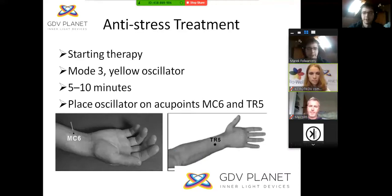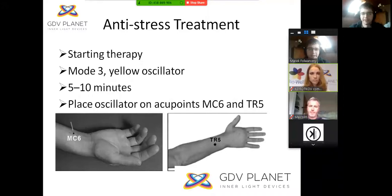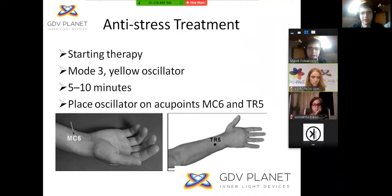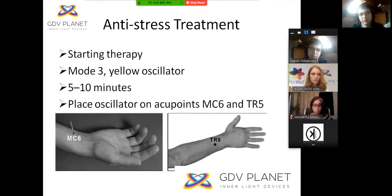Here are some examples of therapies. This is antistress therapy — it is a kind of basic therapy that should be used before other therapies. It can help with stress and bring you to a normal state so you can better accept other therapies. You must put the oscillator on the points shown on screen and start mode 3 for 5 to 10 minutes. The duration depends on your actual stress level — if you are more stressed, 10 minutes is better.